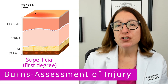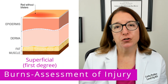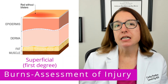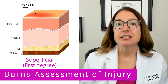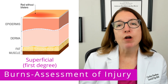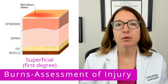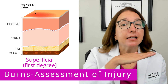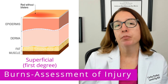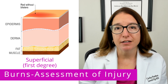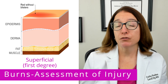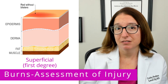With a superficial or first-degree burn, damage is limited to the epidermis. The skin will be intact and red or pink in color. There will not be any blisters present, and the burn will heal without scarring. An example of a superficial burn is a sunburn.